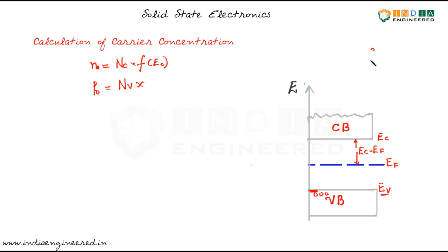If the probability of finding an electron is F of E, then the probability of absence of electron or finding a hole is 1 minus F of E. So by using that argument we can say that number of holes is equal to Nv into 1 minus F of Ev.